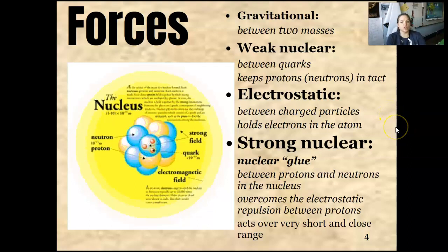Then you have electrostatic, between charged particles, which hold the electrons in the atom. That keeps them in that sphere outside. Then you have strong nuclear. This is the glue. This is between the protons and the neutrons in the nucleus. It overcomes the electrostatic repulsion between protons because remember, plus and plus are going to want to go against each other. And it acts over a short and close range. That's why the protons and neutrons are together and the electrons stay out.